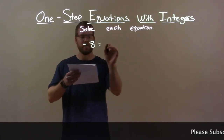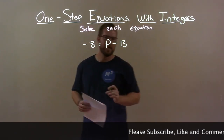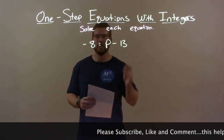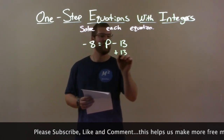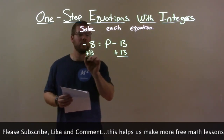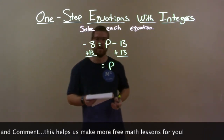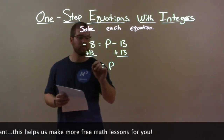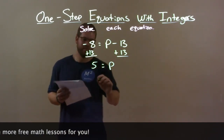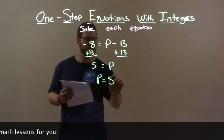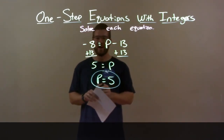Negative 8 equals p minus 13. I want to get p by itself. Right next to it I have minus 13 — opposite of subtraction is addition. So I'm going to add 13 to both sides. This leaves p by itself, and negative 8 plus 13 is a positive 5. So p equals 5, or 5 equals p — I can rewrite that. Either way, my final answer is p equals 5.